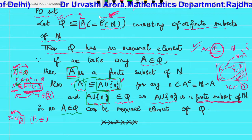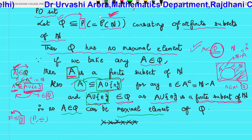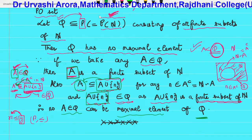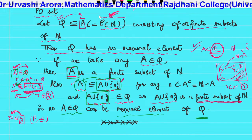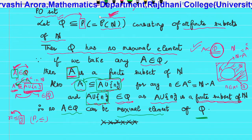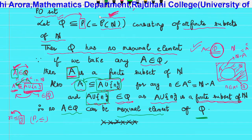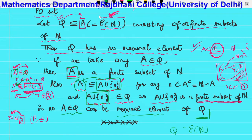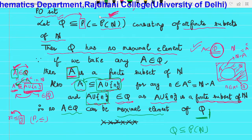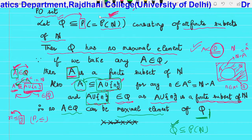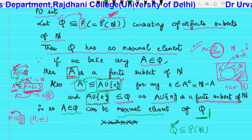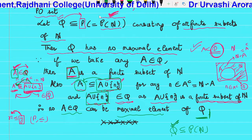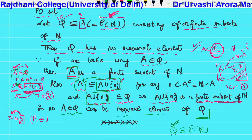So Q has no maximal element. This was a typical example using the power set where a subset Q of the power set of N — specifically Q taken as the set of all finite subsets of the set of naturals — does not have a maximal element. That is all about maximal elements and maximum in a PO set.